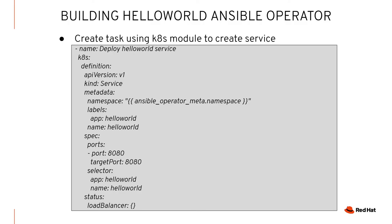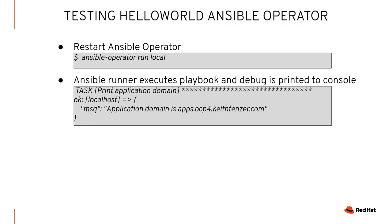The next thing I wanted to demonstrate — though I'm not going to implement it here — is that if you want to manipulate or create an object in Kubernetes, like a service for example, you can use the k8s module to do that. For our hello world operator we're not manipulating any objects at this point, but I did want to include it so you're aware of what that looks like. We've added the tasks to query the ingress object and print out the application domain.